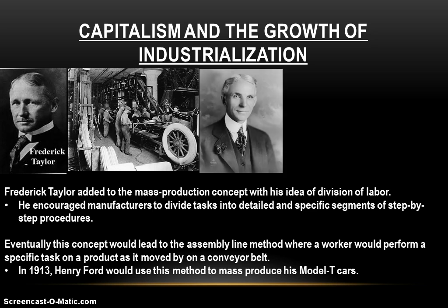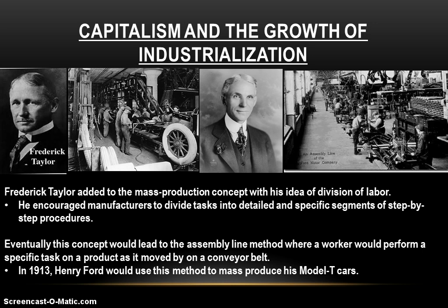Taylor's ideas eventually gave rise to the assembly line method, where a worker performs a specific task on a product as it moves by on a conveyor belt — growing out of this division of labor. In 1913, Henry Ford of the Ford Motor Company used this assembly line method to mass produce his Model T cars. The mass production of the Model T made cars much cheaper to produce and much more affordable for consumers to buy, which meant he sold a whole lot of them and made a whole lot more money. This assembly line method, revolutionized in the early 1900s, is still the norm for how things are produced today.